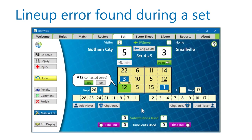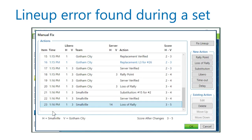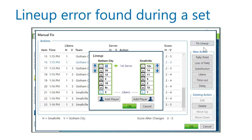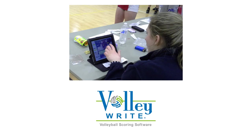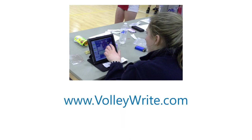If you find a mistake in a team's lineup during a set, get the R2 to stop play so you can use the Manual Fix button. Inside the Manual Fix dialog, the Fix Lineup button shows a diagram similar to the one you accepted at the beginning of the set so you can make the change. You owe it to yourself and to your team to try VolleyWrite. Download the free one-week trial for Windows at www.volleyrite.com and you be the judge. We look forward to your questions and comments sent to info@volleyrite.com.